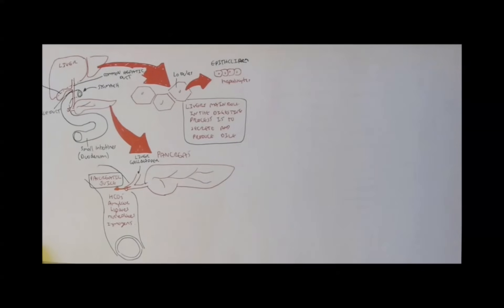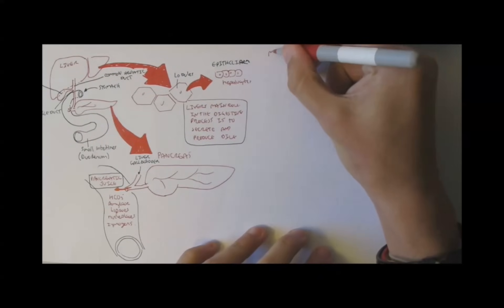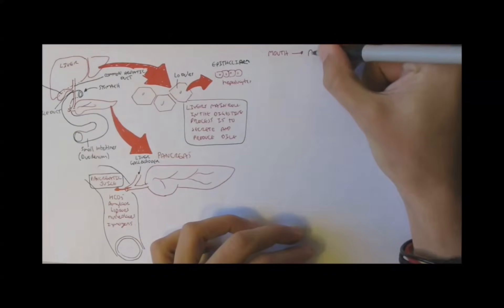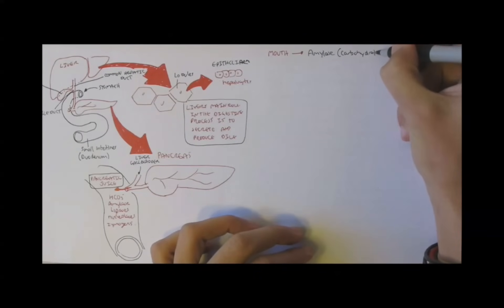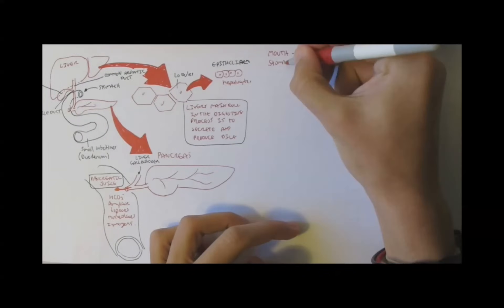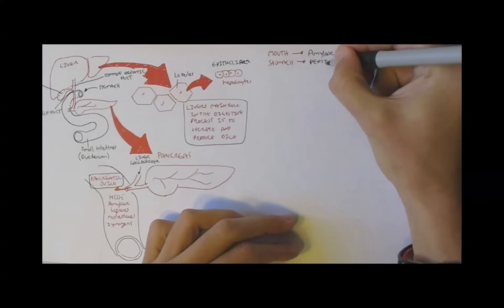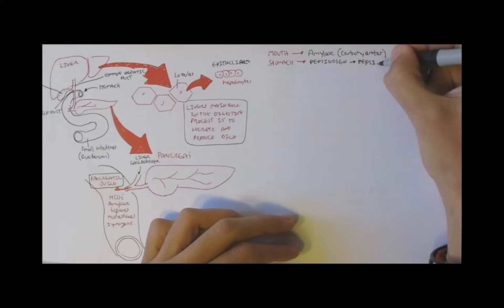So, let's again recap from the beginning of this whole digestive system secretion. The mouth secretes amylase for carb digestion. The stomach secretes pepsinogen, which is a zymogen, which then converts to pepsin to digest protein.